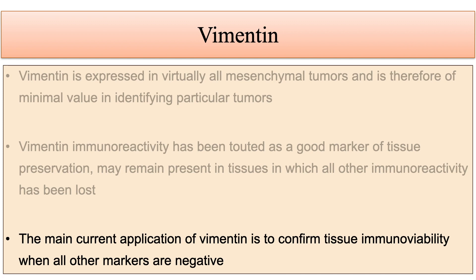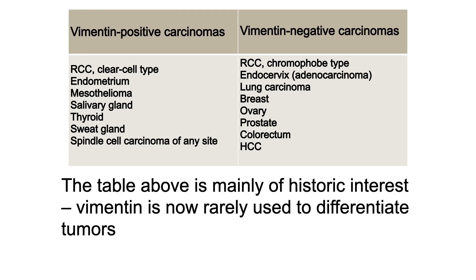Absence of vimentin expression may occasionally be a clue to the diagnosis of rare vimentin-negative mesenchymal tumors such as alveolar soft part sarcoma and perivascular epithelioid cell neoplasm (PEComa). This table is mainly of historic interest; vimentin is now rarely used to differentiate tumors.